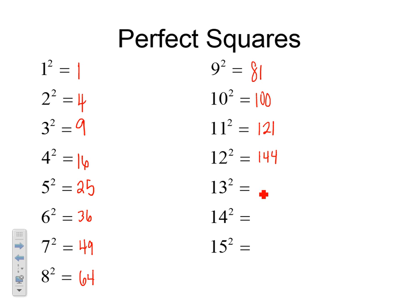121 is 11 squared. 144 is 12 squared. 169 is 13 squared. 196 is 14 squared. And 225 is 15 squared. You need to be able to recognize all these perfect squares through 15. So please write those down in your notes.